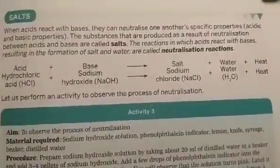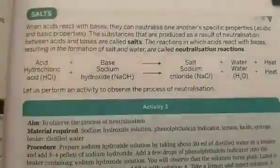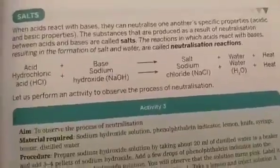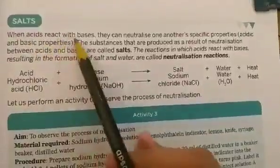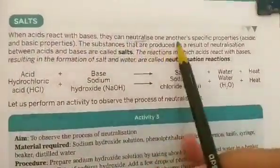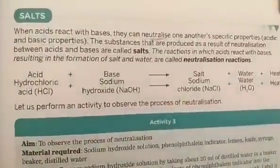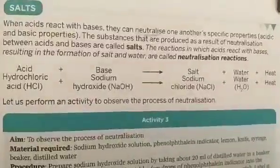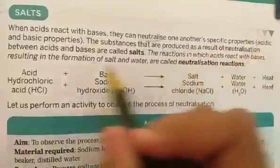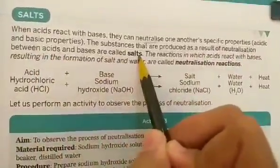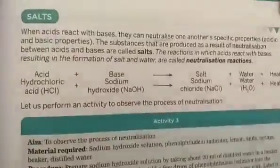If we mix two chemicals of opposite nature — acid and base — and make them react, they will neutralize each other's effect. For example, just like in integers, if I add plus 3 and minus 3, I get a neutral answer of 0, because positive and negative integers cancel out each other's effect. Similarly, when an acid reacts with a base, they neutralize each other's specific properties.